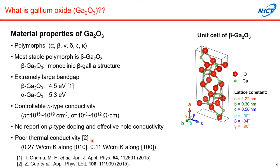Also, gallium oxide has poor thermal conductivity. This is also a typical material property for oxide semiconductors. The thermal conductivity of gallium oxide is less than one-tenth of those of silicon carbide and gallium nitride. Of course, this is a very severe issue for heat dissipation of gallium oxide power devices.